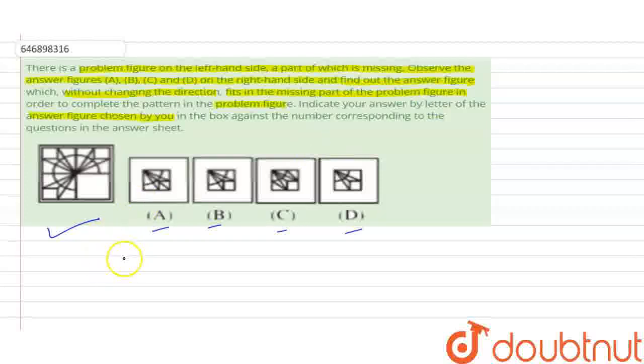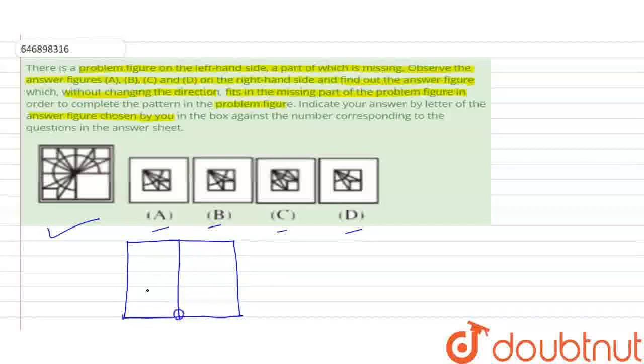First, we have to draw the problem figure. This is a square divided into 4 parts like this, and then we have to draw a circle. Now we need to keep in mind the missing part.